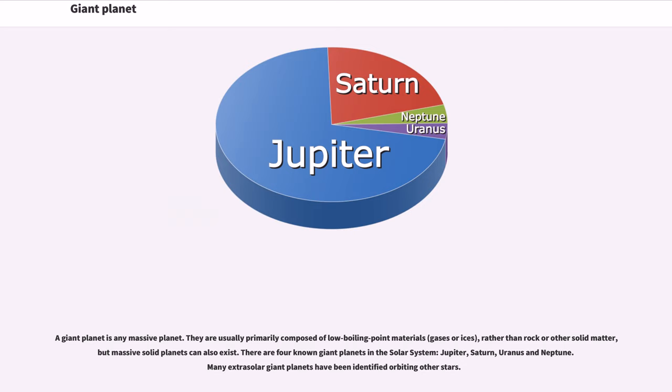There are four known giant planets in the solar system: Jupiter, Saturn, Uranus, and Neptune. Many extrasolar giant planets have been identified orbiting other stars.